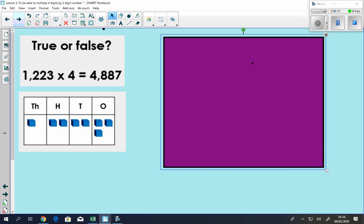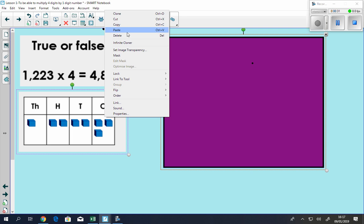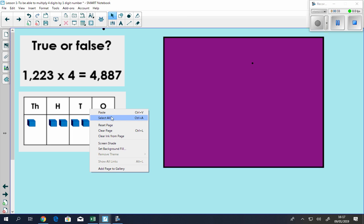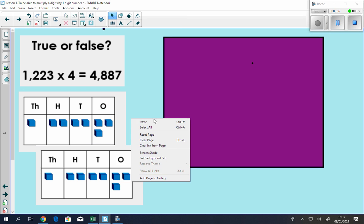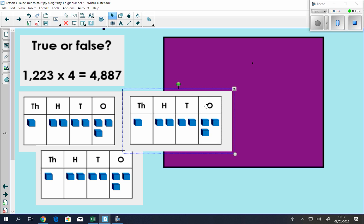True or false, 1,223 multiplied by 4 is 4,887. Here on the left-hand side you can see a visual representation of the number 1,223. So if I were to take that number and actually copy that image three times, then you could actually find out if I multiplied it by four, what would I end up getting?